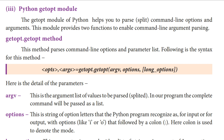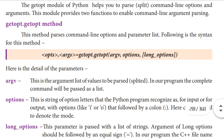So we will see the syntax. First we have to write opts, then comma args, is equal to getopt.getopt. So opts contain the command line options, and args means arguments, that is the parameter list. This function has three parameters: argv, options, and long_options.